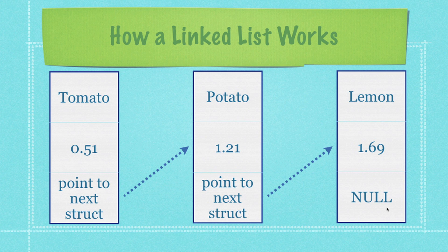To delete products we're going to do essentially the same thing — search through the list, and if we find a match we delete. So let's say we're trying to get rid of potato. We'll change the value for next to instead point to lemon and let everything else be exactly the same. That is precisely what we're going to do in this tutorial, so let's get into it.